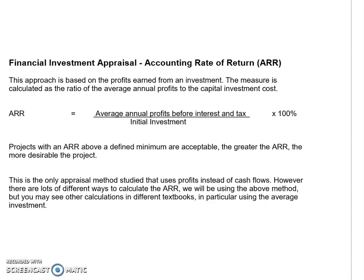The accounting rate of return is the only approach based on profit. It looks at the profits earned from an investment and takes the average annual profits before interest and tax as a ratio of the initial investment. There are a number of ways to calculate the ARR — you'll often see one that uses an average investment. Whichever method you choose, as long as you stick to it consistently and set your target using that same method, it doesn't matter. For this video, we'll use average annual profits before interest and tax divided by the initial investment.